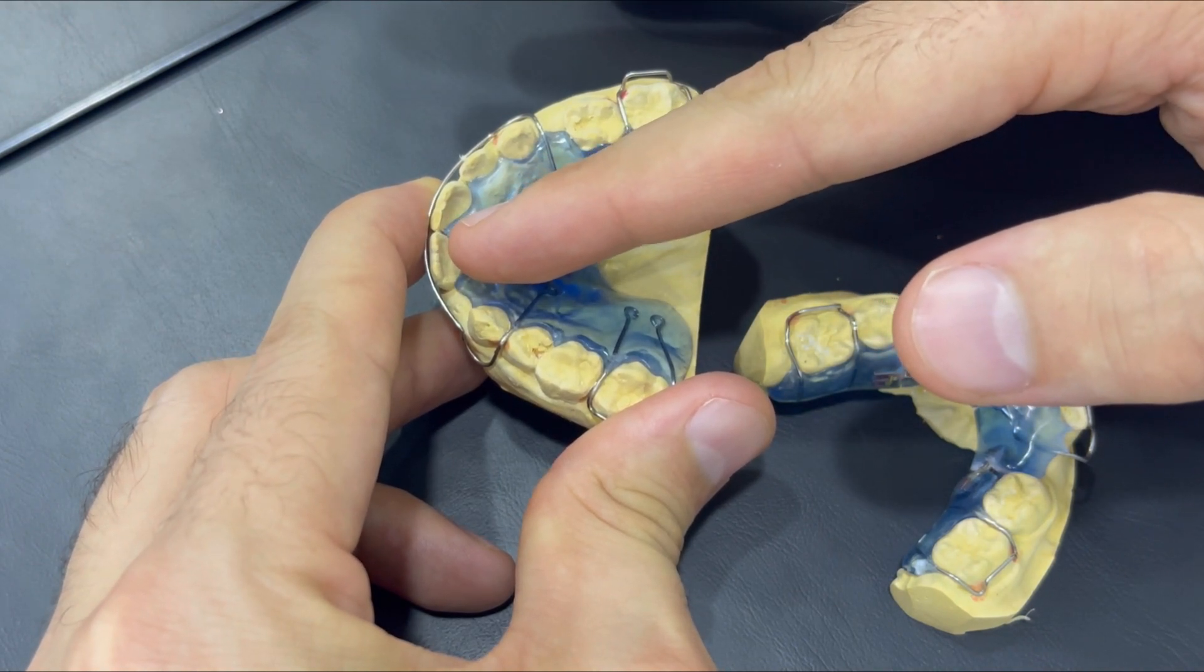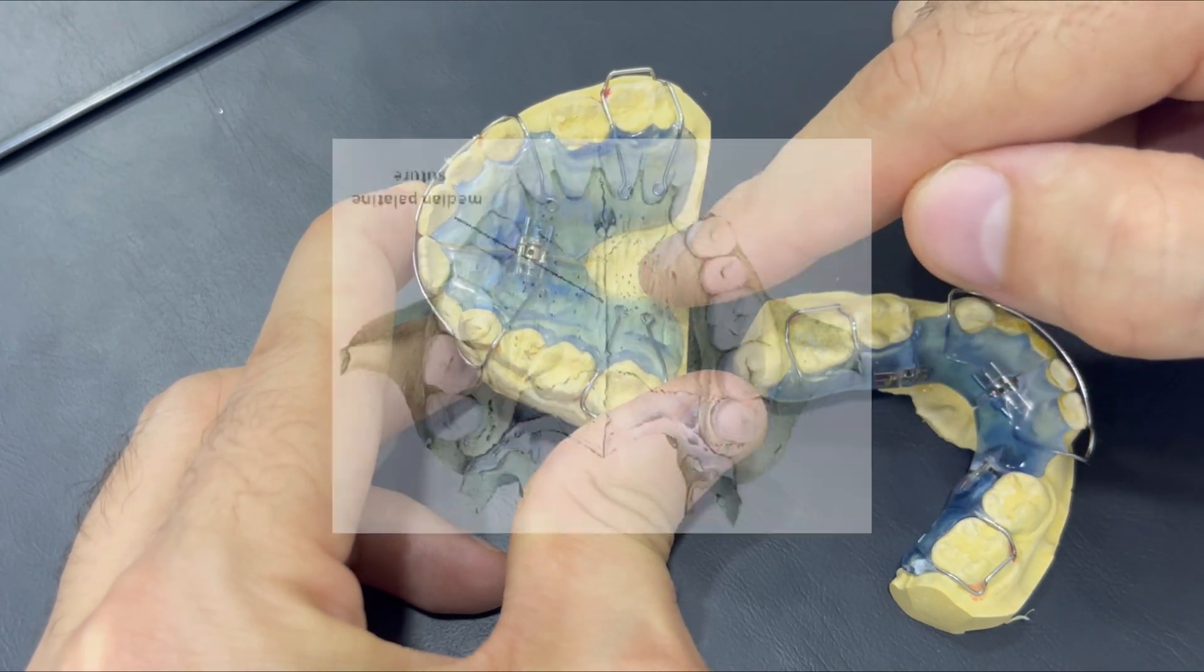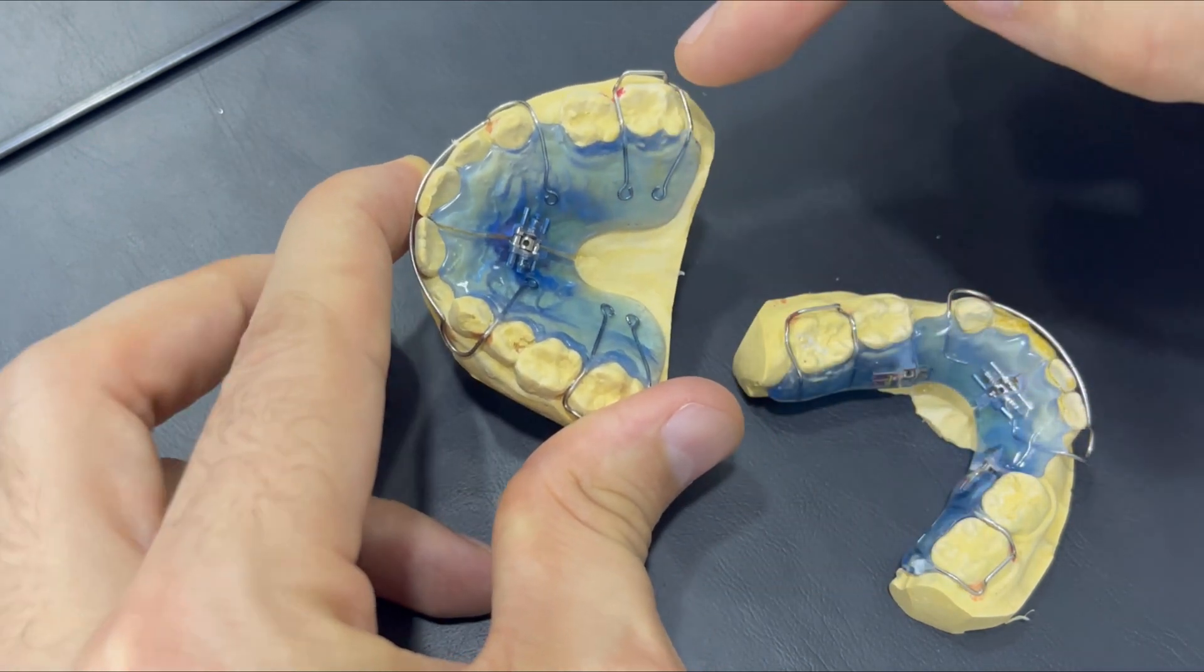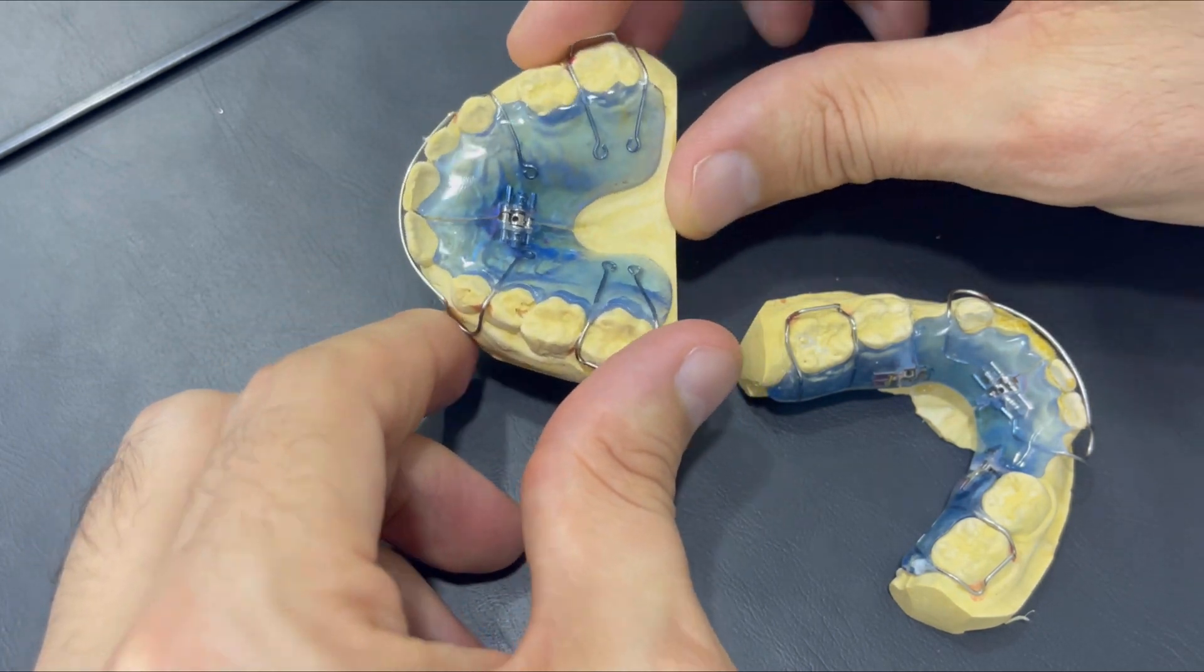And splitting the maxilla, the two halves of the maxilla in the palatal suture which is passing here in this line. And we could see diastema in the middle, or the space between the central teeth, which is a good sign of the successful expansion.